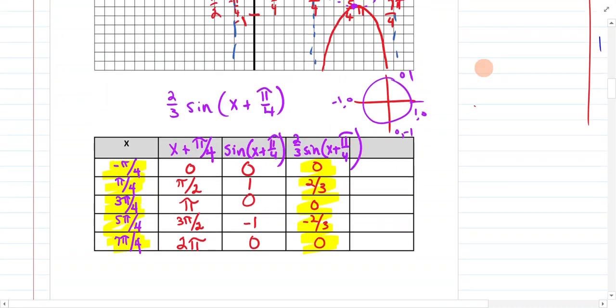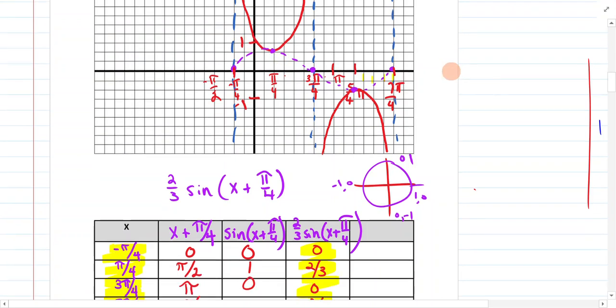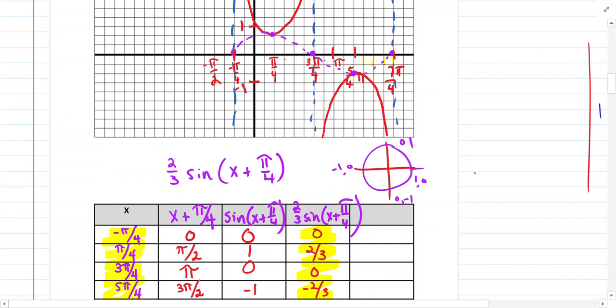We go to our graph. And we're going to graph from negative pi over 4 to 7 pi over 4. When we're at negative pi over 4, we're at 0. When we are at positive pi over 4, we're at two-thirds. I made this be 1. When we're at 3 pi over 4, we are at 0 again. Then we're at negative two-thirds. And then we're back at 0.